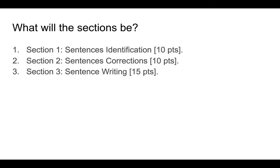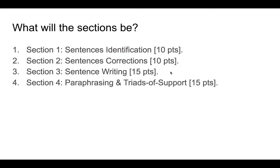Section three will be sentence writing. This is a chance for you to show me your ability to create sentences. I will provide guidance on the type of sentence I want you to write and the linking words that you will have to use if you want to receive full points. There will be 15 points allotted to that section.